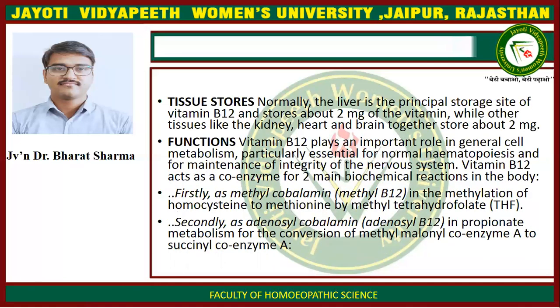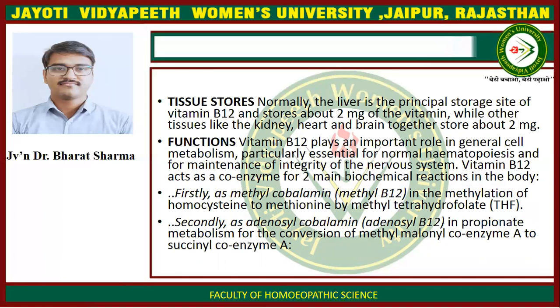Tissue Stores: Normally the liver is the principal storage site of vitamin B12 and stores about 2 mg of the vitamin, while other tissues like the kidney, heart, and brain together store about 2 mg. Functions: Vitamin B12 plays an important role in general cell metabolism, particularly essential for normal hematopoiesis and for maintenance of integrity of the nervous system. Vitamin B12 acts as a co-enzyme for two main biochemical reactions: firstly, as methylcobalamin in the methylation of homocysteine to methionine by methyl tetrahydrofolate; secondly, as adenosylcobalamin in propionate metabolism for the conversion of methylmalonyl coenzyme A to succinyl coenzyme A.